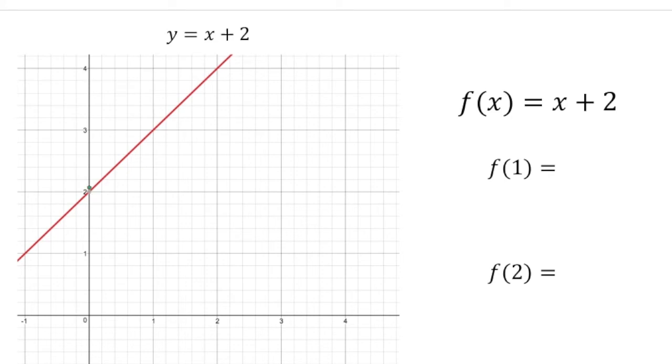So we have a y intercept of 2 and a slope of 1. And here's the function written in function notation. And what this means is what's the y value when x is 1. And what you do is, let's see, well here's the x value of 1. So our answer is going to be 3.